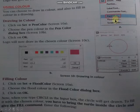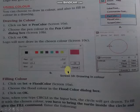यहाँ पर click करेंगे तो हमें flood color dialog box मिलेगा, जिसमें से हम हमारा color choose कर सकते हैं। After choosing color, click OK. Now, when you type a circle in the input box, the circle will get drawn. To fill it with the chosen color, you have to bring the turtle inside the circle and give the fill command.